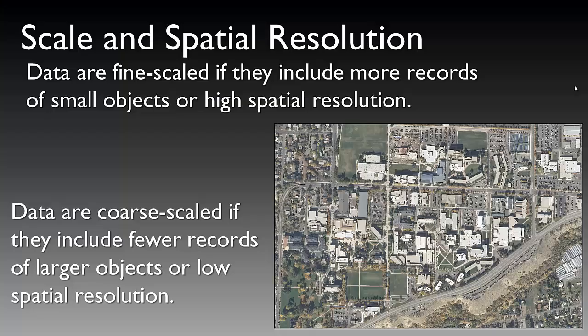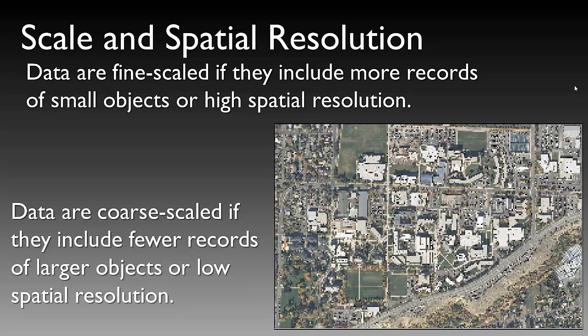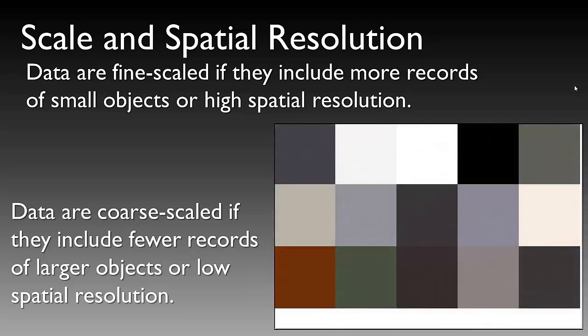Data are fine scaled if they include more records of small objects or high spatial resolution. Data are considered coarse scaled if they include fewer records of larger objects or low spatial resolution. In the aerial photo of the Utah State University campus taken in 2009, this is a half meter pixel resolution data set. We can step through this data and resample it to show how changing pixel size impacts resolution and coarseness. This is a 1 meter data set, a 2 meter data set, a 5 meter data set, a 30 meter data set, and a 250 meter data set.